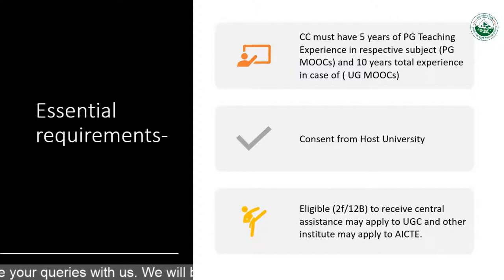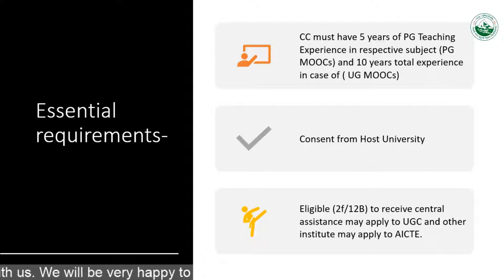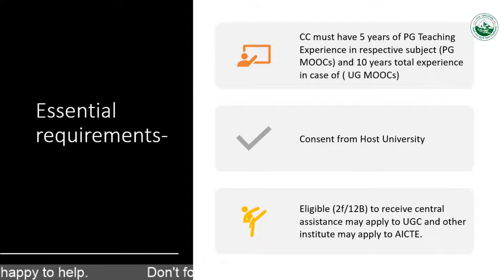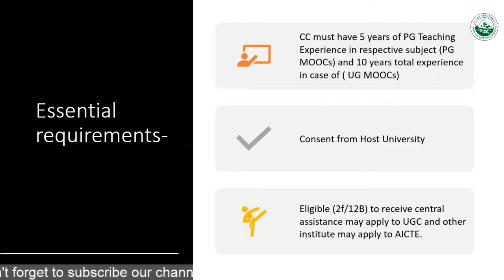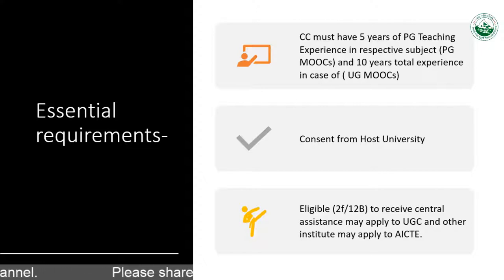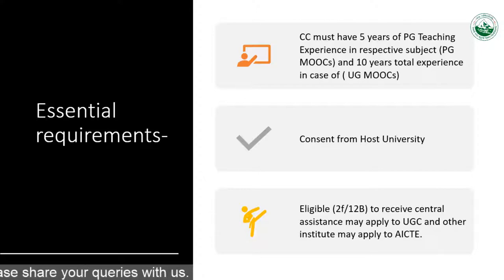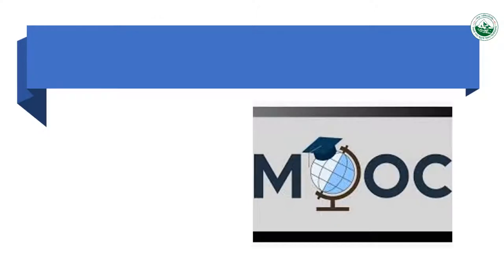Very importantly, you need a consent letter from the host university. In the expression of interest, at the end of it, you will find a format for the same, and you have to take it from the university. For non-governmental universities, if your university has the status of 2F and 12B, then you can go for development of a MOOC.